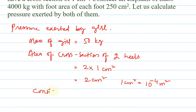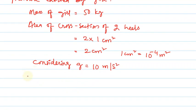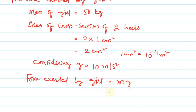Considering acceleration due to gravity as 10 meter per second square. Force exerted by girl equals mass into acceleration due to gravity. Mass is 50 kilograms and acceleration due to gravity is 10 meter per second square. That is 50 into 10 kilogram meter per second square, which equals 500 newtons, because kilogram meter per second square is nothing but a newton.